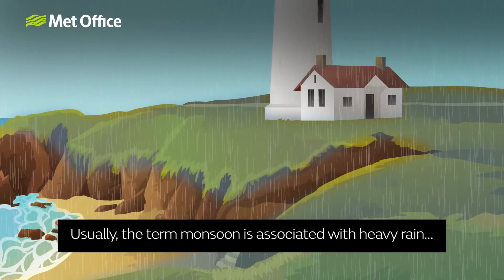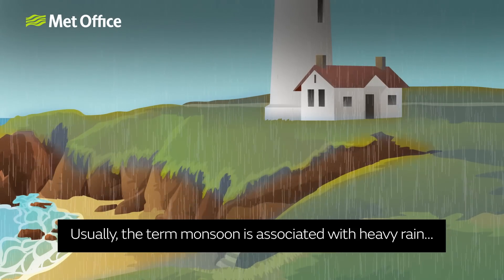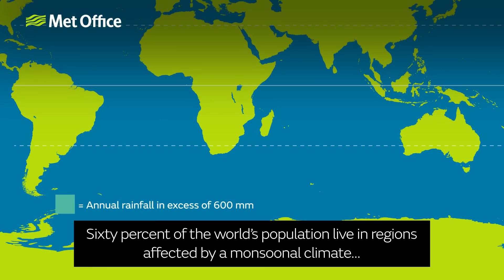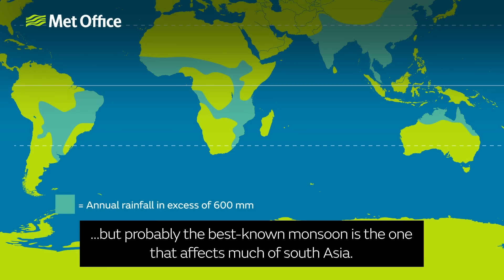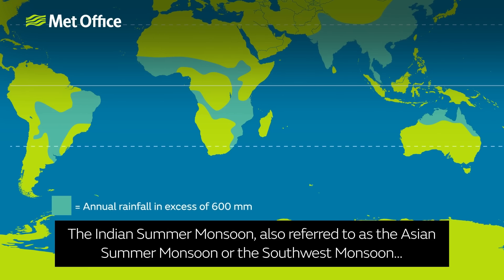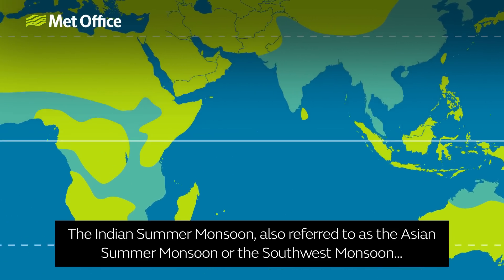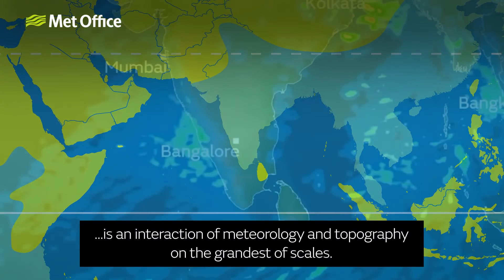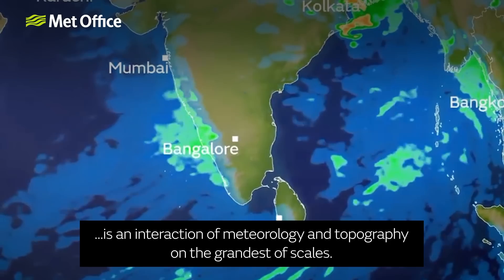Usually the term monsoon is associated with heavy rain, but in this seasonally changing pattern there is also a dry phase in the winter months. 60% of the world's population live in regions affected by monsoonal climate, but probably the best known monsoon is the one that affects much of South Asia. The Indian Summer Monsoon, also referred to as the Asian Summer Monsoon or the Southwest Monsoon, is an interaction of meteorology and topography on the grandest of scales.